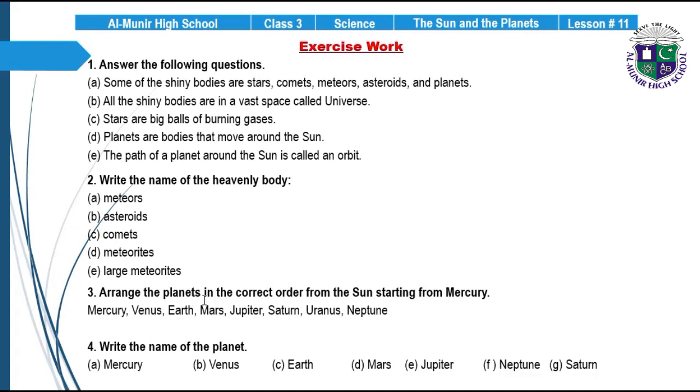Question number 3: Arrange the planets in the correct order from the Sun starting from Mercury. Number 1: Mercury, Venus, Earth, Mars, Jupiter, Saturn, Uranus, and Neptune. Question number 4: Write the name of the planets. A: Mercury, B: Venus, C: Earth, D: Mars, E: Jupiter, F: Neptune, G: Saturn. This is all for today. Thank you. Allah Hafiz.